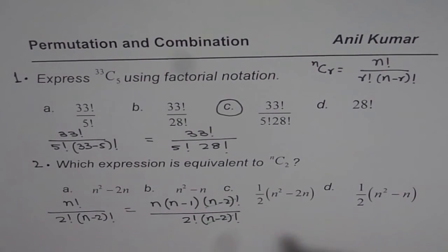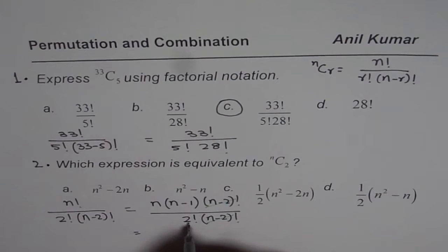That should be the right option. So we get half, 2 factorial is 2, so we get half of, when you expand this, you get n square minus n.